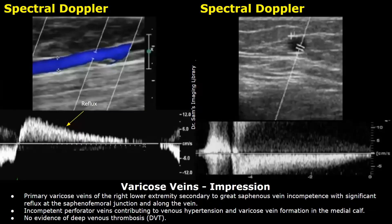Impression: primary varicose veins of the right lower extremity secondary to great saphenous vein incompetence, with significant reflux at the saphenofemoral junction and along the vein. Incompetent perforator veins are contributing to venous hypertension and varicose vein formation in the medial calf. No evidence of deep venous thrombosis.